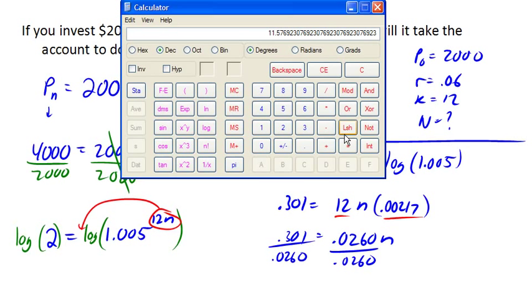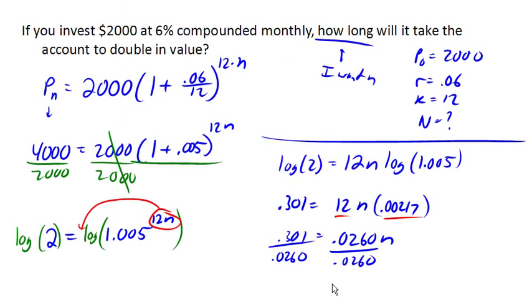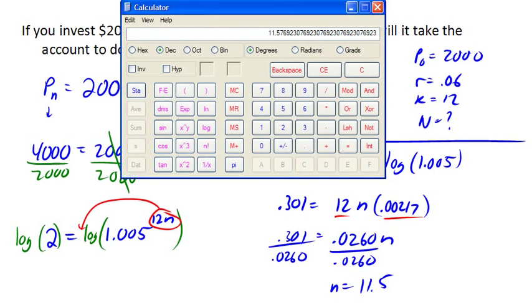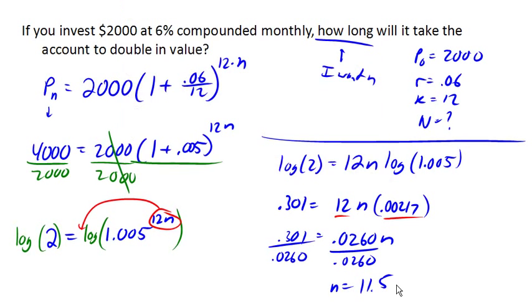So n is 11.5, what did I just say? 11.577, seven, seven years. So it's going to take a little over 11 and a half years for this account to double in value.